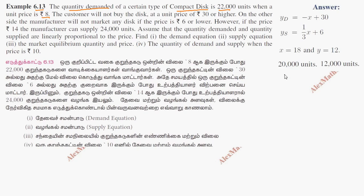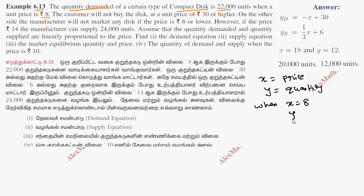So if we take X as the price and Y as the quantity, we take the first condition: when X is equal to 8, Y is equal to 22,000. This is the first condition.